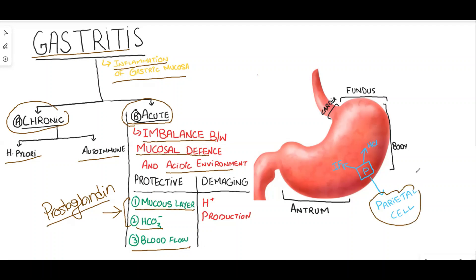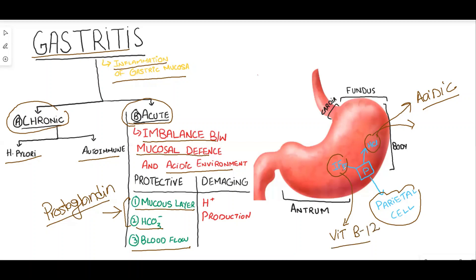The parietal cells present in the stomach secrete HCl and intrinsic factor. HCl leads to the acidic environment of the stomach and can damage the gastric mucosa. Excessive blood flow absorbs this HCl. Intrinsic factor is compulsory for vitamin B12 absorption in the terminal ileum, acting as a vitamin B12 binding protein. Imbalance between HCl production and these protective factors leads to acute gastritis.